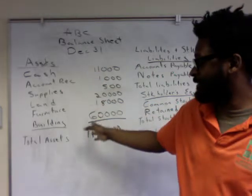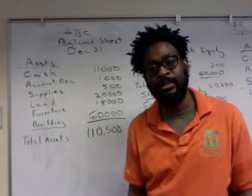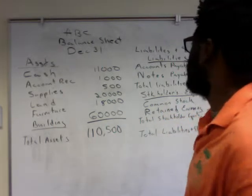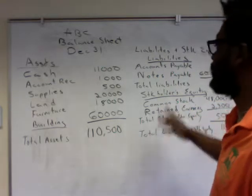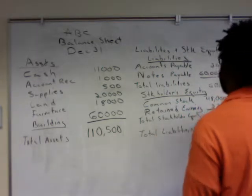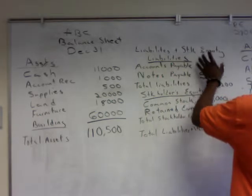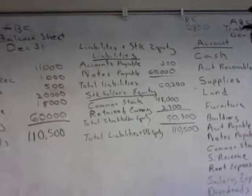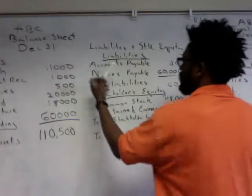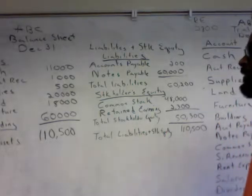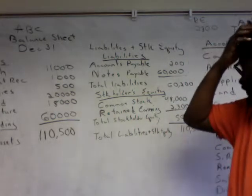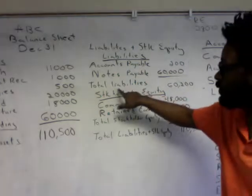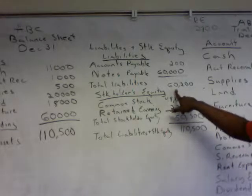Our total assets came to $110,500. Next, we calculate the other part of the accounting equation: liabilities plus stockholders' equity. We always list liabilities first. In this situation we had two liabilities: accounts payable of $200 and notes payable of $60,000, giving us a total liability amount of $60,200.